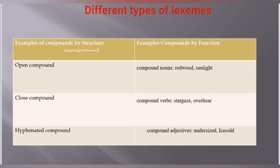There are different types of lexemes. You have compound lexemes where two words like 'redwood' and 'sunlight' combine into a single lexeme. There are also closed compounds, compound verbs like 'stargaze,' and hyphenated compounds. Compound adjectives like 'undersized' and 'ice cold' are a single lexeme but in a complex form.